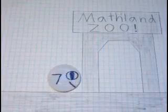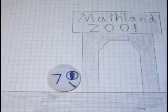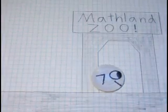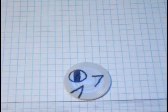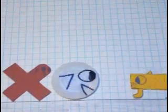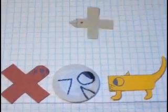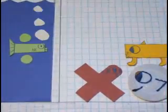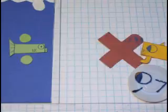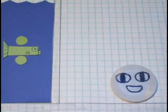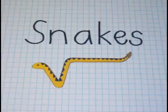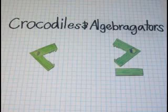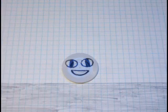Okay, our last stop for today is the zoo. In addition to the common animals, like dogs, cats, birds, and fish, Mathland also has some bizarre ones, like snakes, crocodiles, and algebra gators. Thank you for coming today. See you later!